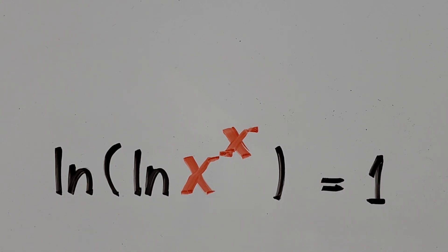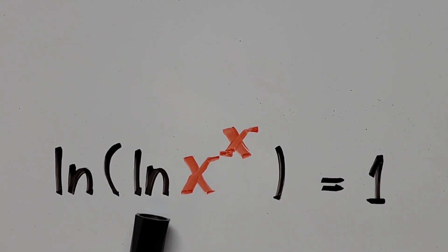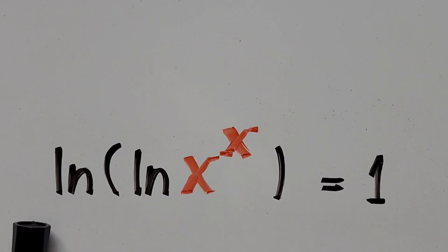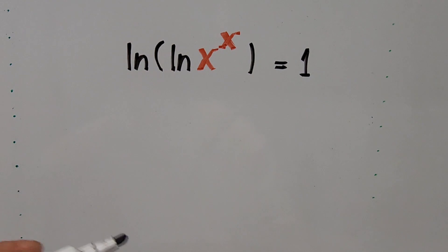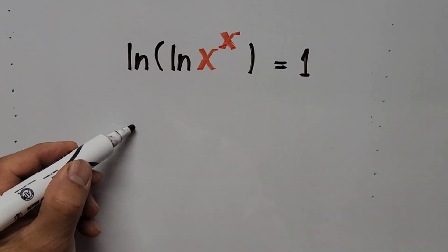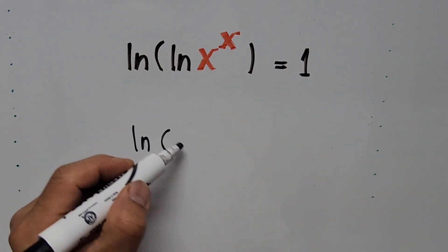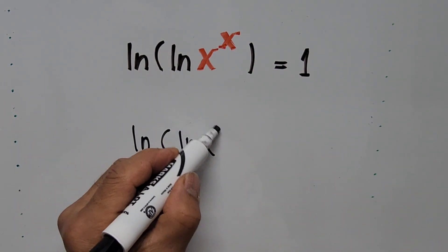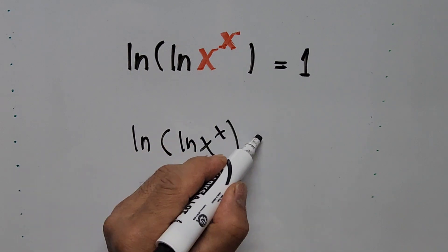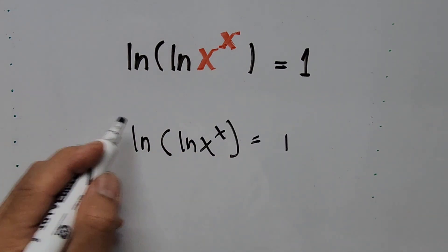If you notice the left-hand side of the equation has a natural logarithm with another natural logarithm inside the parentheses. So all we have to do is transform this logarithmic equation into exponential form. We have: natural logarithm of the quantity natural logarithm of x to the power of x equals 1.